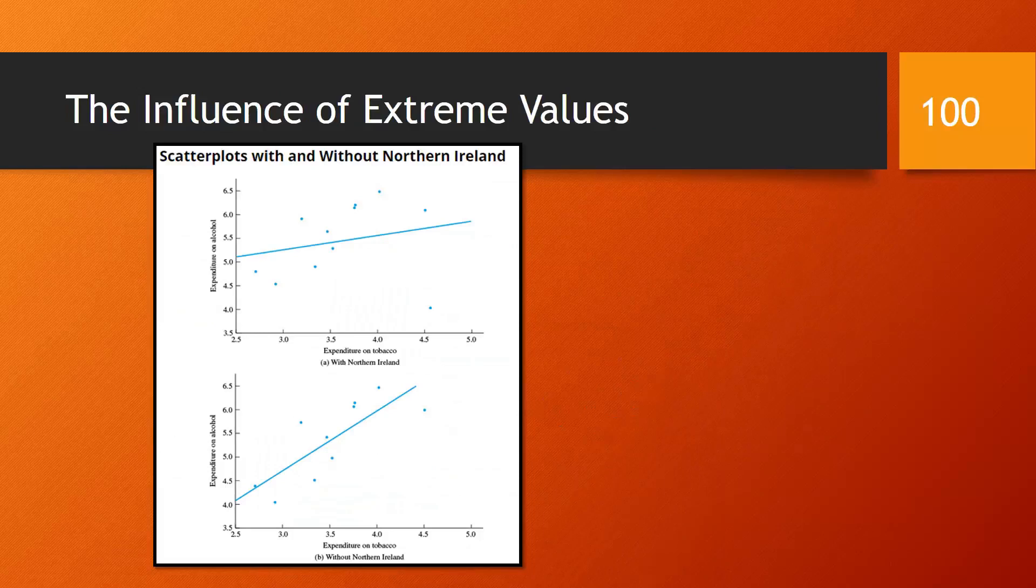Let's look once more at the influence of extreme values. Notice these two scatter plots. In the second one, the outlier, Northern Ireland, has been removed. Notice the drastic change in the slope of the regression line. Isn't the revised regression line going to be a better predictor of what is most likely to occur? Sure, outliers will continue to happen now and then. But when we predict, we want to talk about the most likely future scenarios for the widest set of the population.